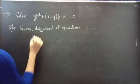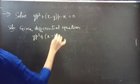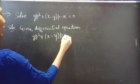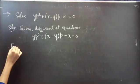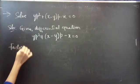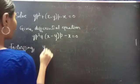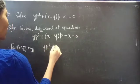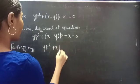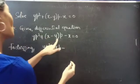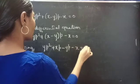Problem: Solve YP² + (X minus Y) into P minus X equals to 0. By factorizing, we get YP² + XP minus YP minus X equals to 0.